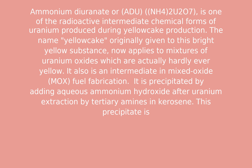Ammonium diuranate, or U2O7, is one of the radioactive intermediate chemical forms of uranium produced during yellowcake production. The name yellowcake was originally given to this bright yellow substance, but now applies to mixtures of uranium oxides which are actually hardly ever yellow.